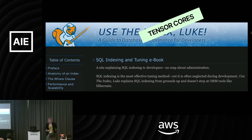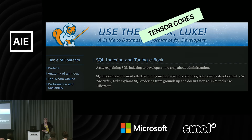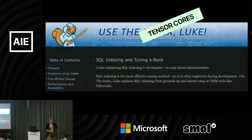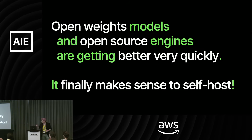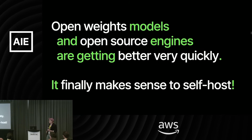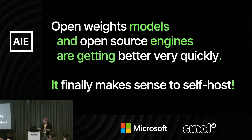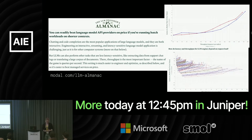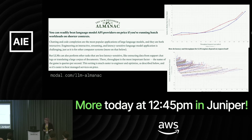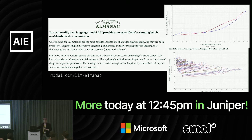In building your system, there's basically one part of an NVIDIA GPU — and an equivalent in other GPUs — that is fast, good, and keeps getting better. It's the tensor core, and it does matrix-matrix multiplication. You should make sure you're using it and not not using it, just like an index on a database. Open-weights models and the open-source software to run them, like Dynamo, are getting better very quickly, so it finally makes sense to self-host.